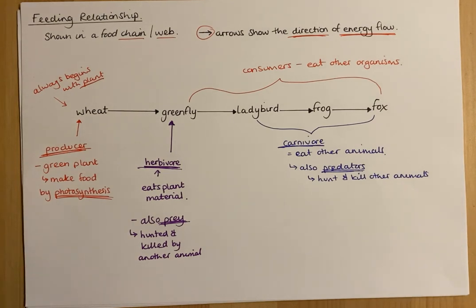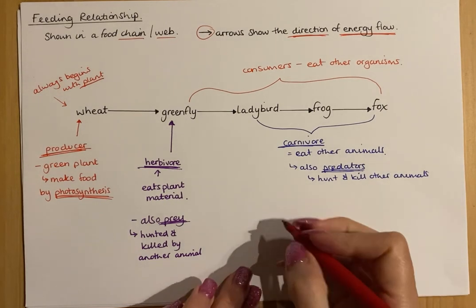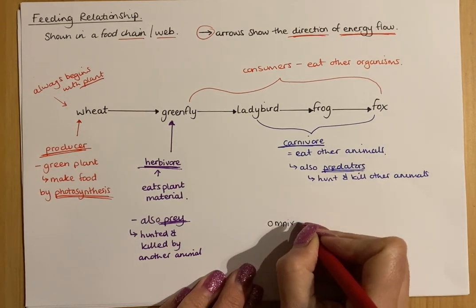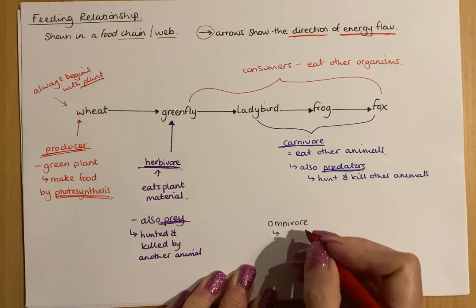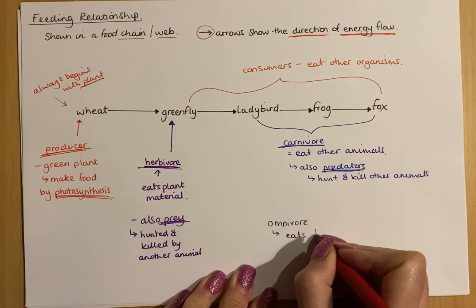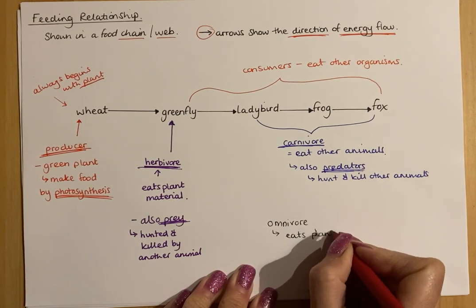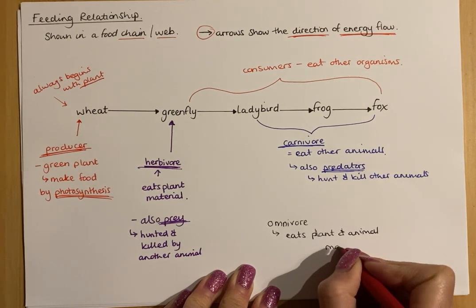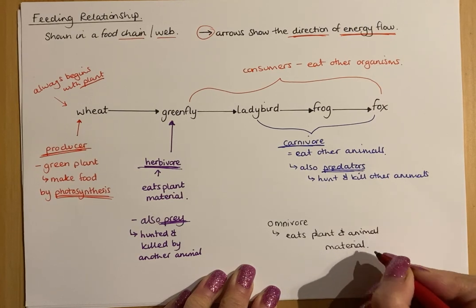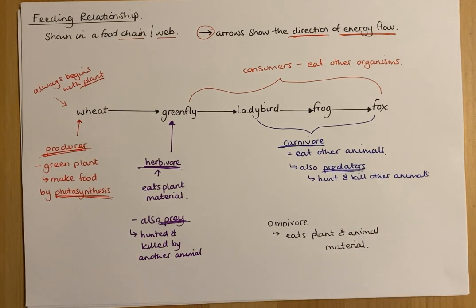There's one term not in this food chain but applicable to the food web: omnivore. An omnivore is an organism that eats both plant and animal material. Humans, for example, are omnivores because we eat plants and other animals.